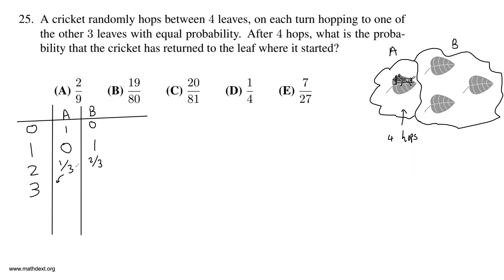The only way to get back to the first leaf after three hops is to not be on the first leaf after two hops. There are three leaves and only one is the target, so the probability the cricket returns to its first leaf is one third. But you have to be careful: the cricket was only on a different leaf two thirds of the time. So you multiply by two thirds, and overall after three hops, the probability the cricket is in state A is two over nine. By extension, seven over nine is the probability the cricket is not on its starting leaf.